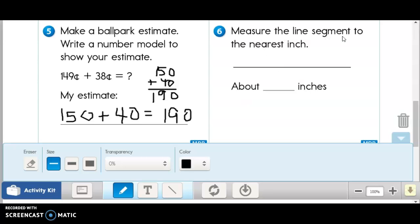Measure the line segment to the nearest inch. Now you are going to, it does say about, so I'm going to remember that my thumb is about an inch. So when I put my thumbs up there and I count, it's not going to be exact, friends. It's going to be an estimate.